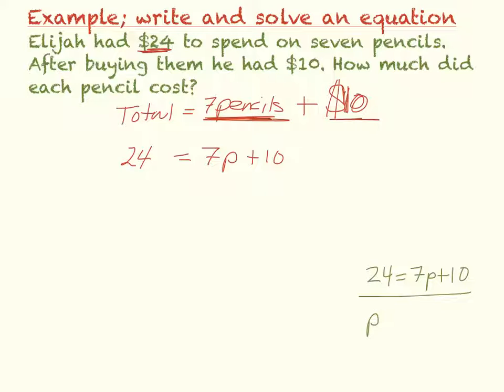So the equation I'm solving is twenty-four equals seven P plus ten. Now I need to solve for P. P equals an amount of money. How much per pencil? So the first step, opposite of plus ten, is minus ten. Work outside in. If you do it to one side of the equation, you've got to do it to the other side. So minus ten.